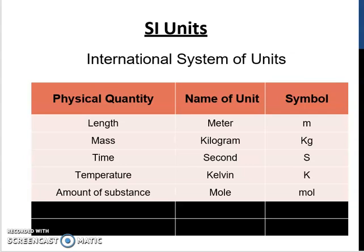For example, to measure length we can use meter, centimeter or millimeter, but the SI unit for length is meter with the symbol small m. The SI unit for mass is kilogram, for time is second, for temperature is Kelvin, and for amount of substance is mole. Amount of substance is what we use in chemistry.